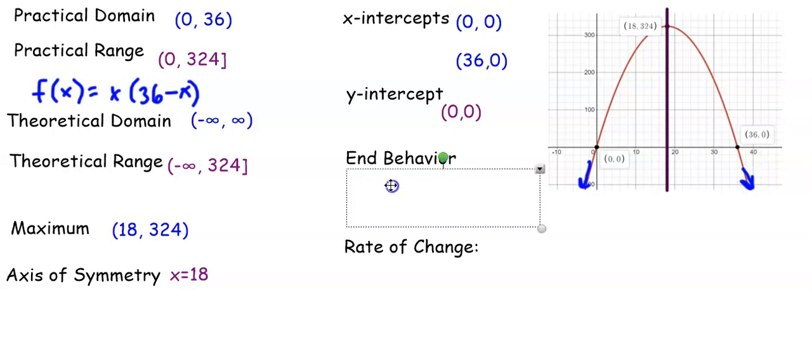And the way that we write that out is to say that as x is approaching negative infinity, so as x approaches negative infinity, so going towards negative infinity, y is decreasing, it's approaching negative infinity. So the end of this function is going to continue decreasing as x continues to decrease.